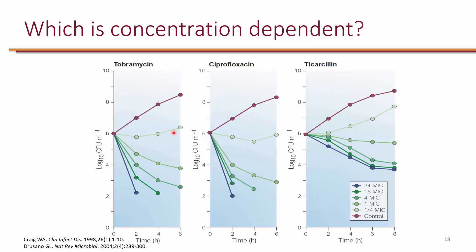In these experiments, antibiotics are given in increasing concentrations to see how increasing concentration affects growth. For tobramycin: at a quarter MIC, bacterial growth slows but isn't completely prohibited. At exactly MIC concentration, bacteria start to die — colony forming units drop. At four times the MIC, bacterial growth drops faster. This suggests tobramycin has concentration-dependent killing: the higher the concentration, the greater the drop in organism growth.